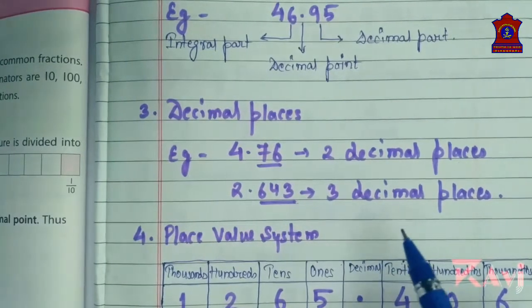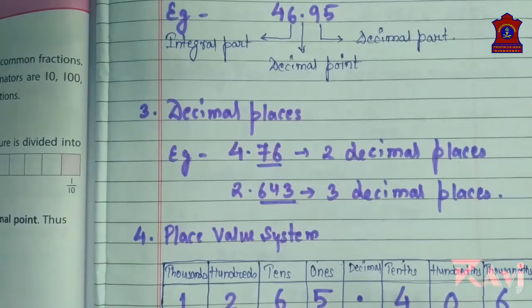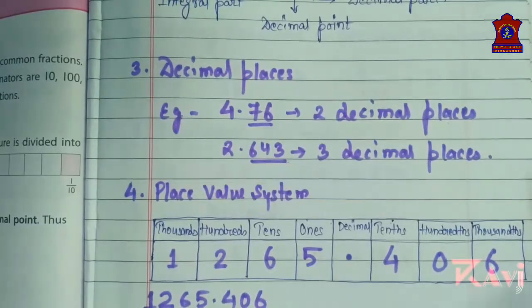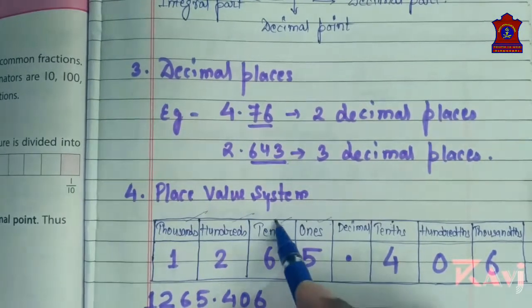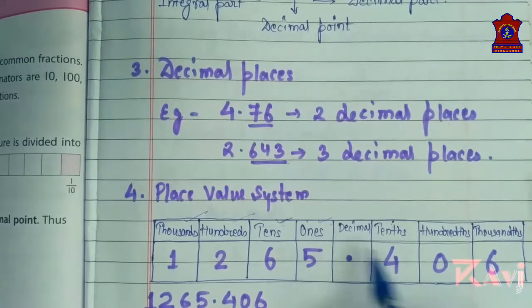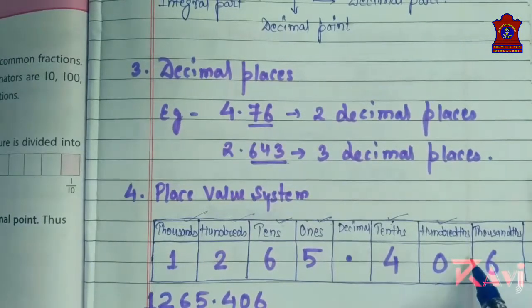Next is the place value system. Decimal numbers extend the place value system to the right of the ones place. We have ones, tens, hundreds, thousands. To the right of ones is a decimal point, then tenths, then hundredths, then thousandths, and it goes on and on.